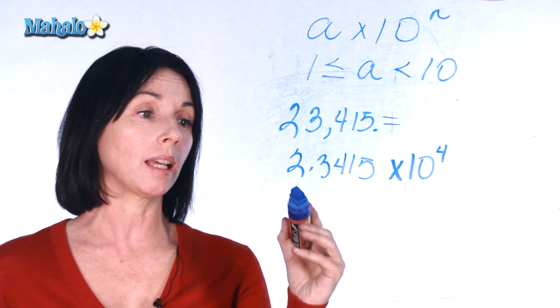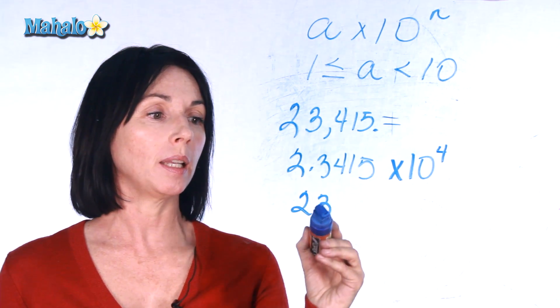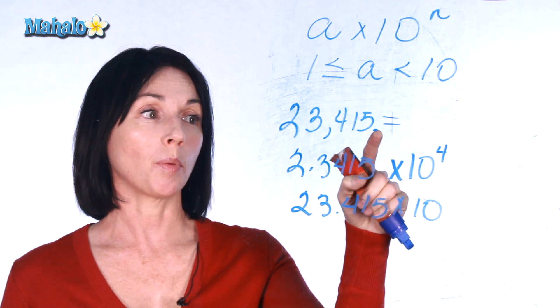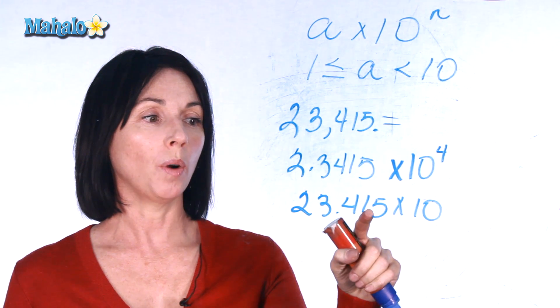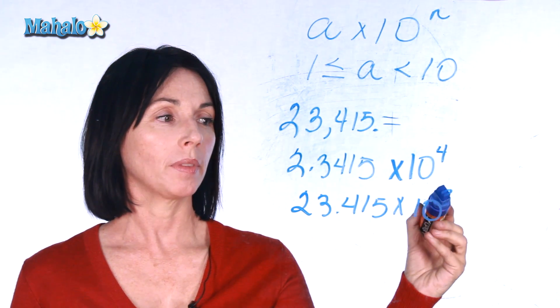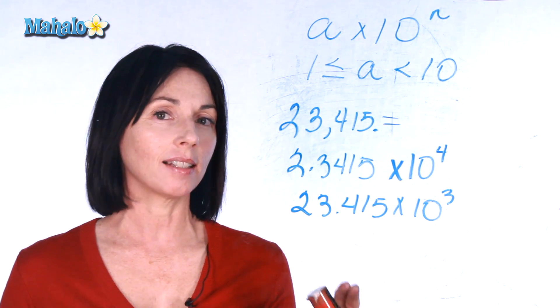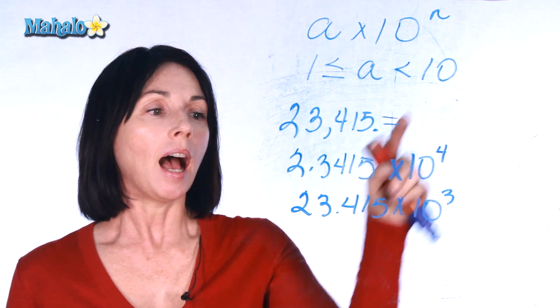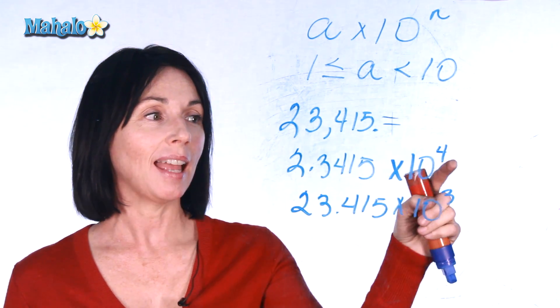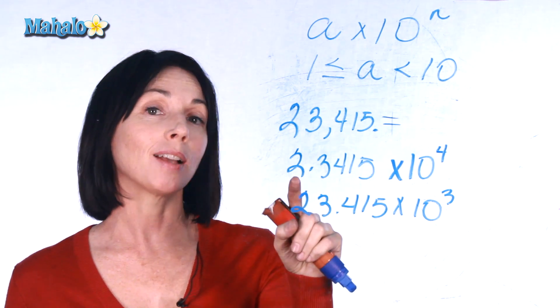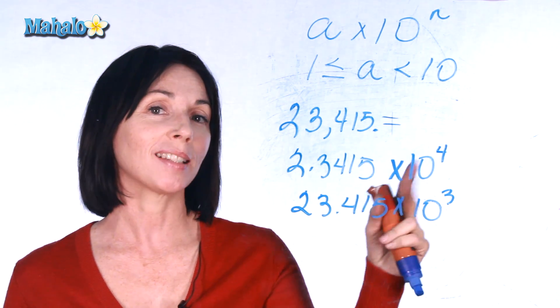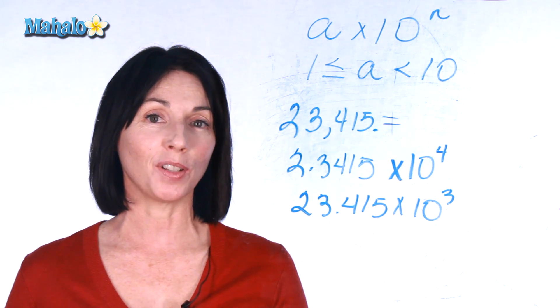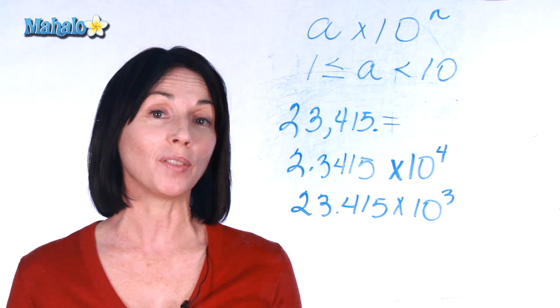Now, if I had written it like this, 23.415 times ten to the power of three, the decimal place was here and I moved it one, two, three places. This isn't technically scientific notation because this number is greater than ten. I can still pull one more power of ten out of it as I did here and write it as 2.3415 times ten to the power of four. That's how you write a number in scientific notation and we're going to do another example of it.